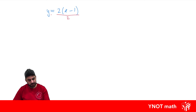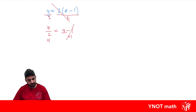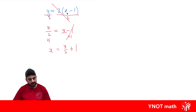So let's divide both sides by 2. Those 2's cancel out, so we're left with y over 2 equals x minus 1. Then we can go ahead and add 1 to both sides, because minus 1 plus 1 is gone. We're going to be left with just x on one side, and y over 2 plus 1 on the other. So our formula that was y equals 2(x minus 1) is now x equals y over 2 plus 1.